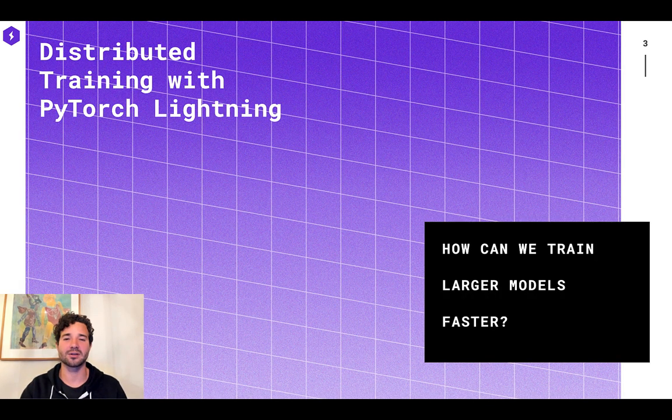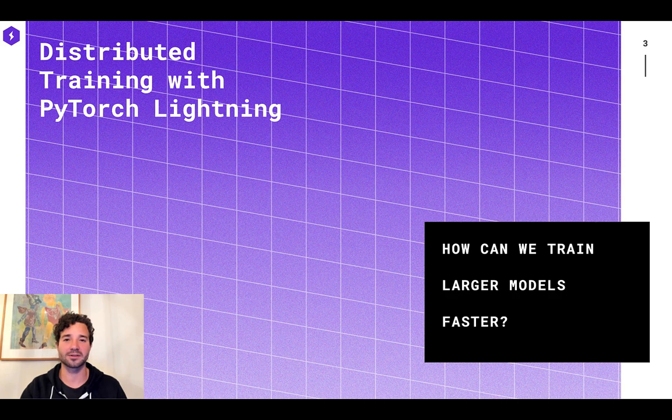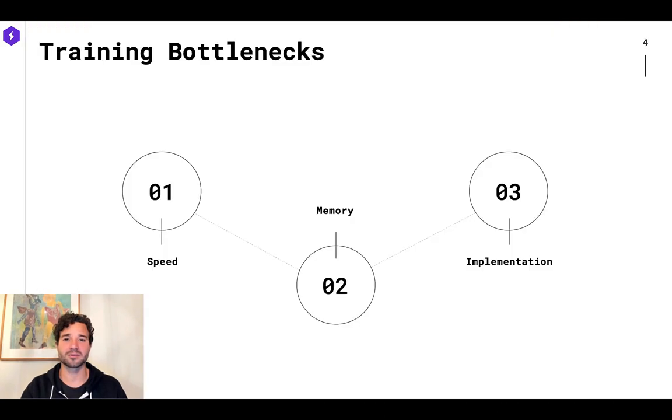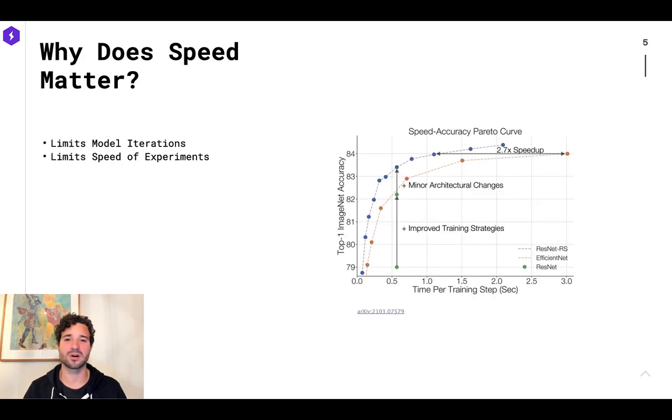So how do we train large models longer and faster? You have to overcome three bottlenecks. The first one is speed. The second one is memory. And the third one is the actual implementation. Speed is very critical when you're going through the model iteration process. You have an idea, you have some data, and you want to use machine learning or deep learning to get something out of it. The faster you can try ideas, the faster you're going to find results.